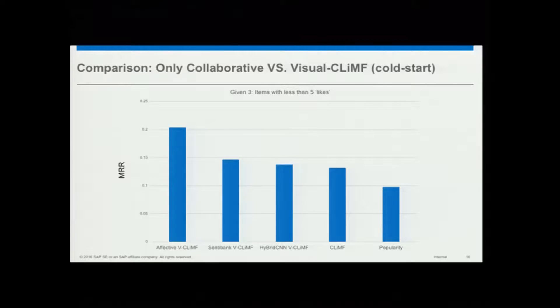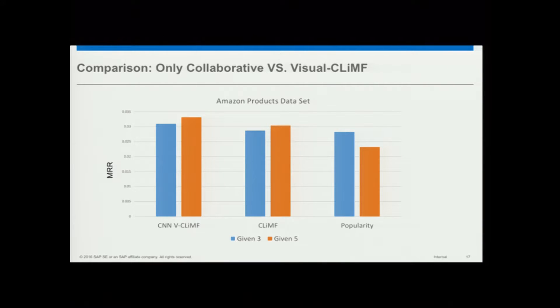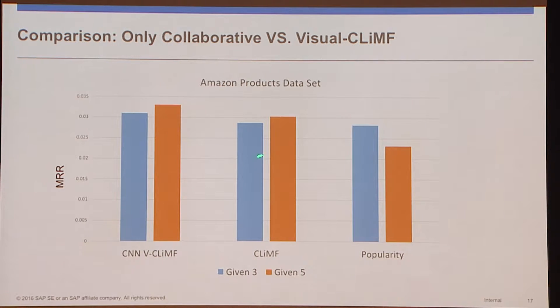For the cold start situation — cold start for us is less than five likes — the affective Visual CLIMF approach is significantly better than a popularity-based approach or CLIMF. Combining visual and collaborative information is clearly useful. Looking at the Amazon products dataset, it only provides convolutional neural network-based representations, which are not a very good representation. This experiment tells us that the representation matters — even for Visual CLIMF, it's not so different from CLIMF when the content representation is poor.